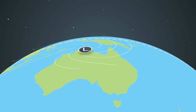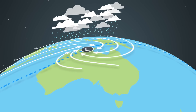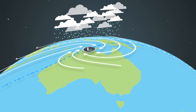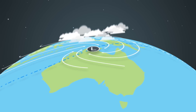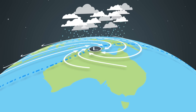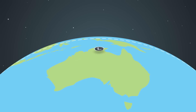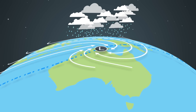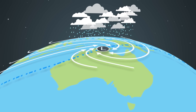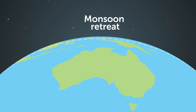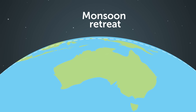Northern Australia typically sees about three monsoon bursts each wet season, sometimes occurring as late as mid-April. The end of the final monsoon burst of the year is called the monsoon retreat.